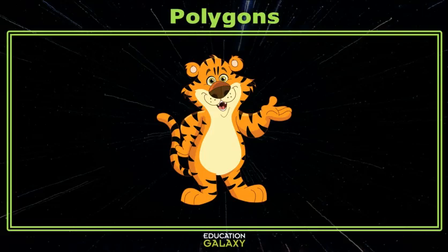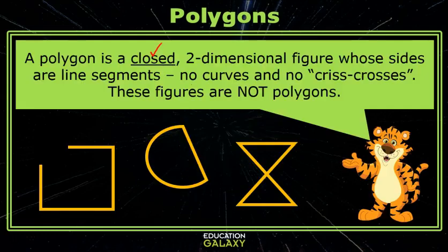Hey guys, I'm Tigger the Tiger and today we're going to talk about polygons. A polygon is a closed two-dimensional figure whose sides are line segments. That means there are no curves and no criss-crosses. These figures are not polygons.